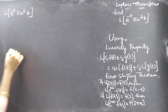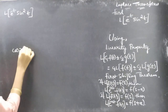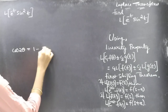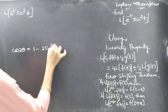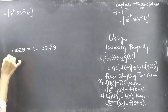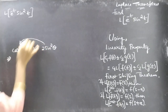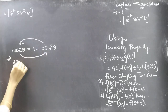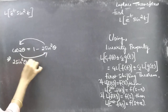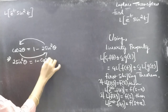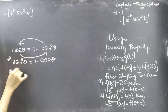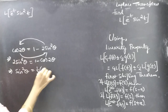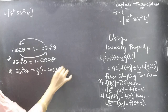We know that cos 2θ equals 1 minus 2 sine squared θ. Now bring the 2 sine squared θ to the LHS and take cos 2θ to the RHS. Then you will get 2 sine squared θ equal to 1 minus cos 2θ. Then sine squared θ equals 1 by 2 into 1 minus cos 2θ.